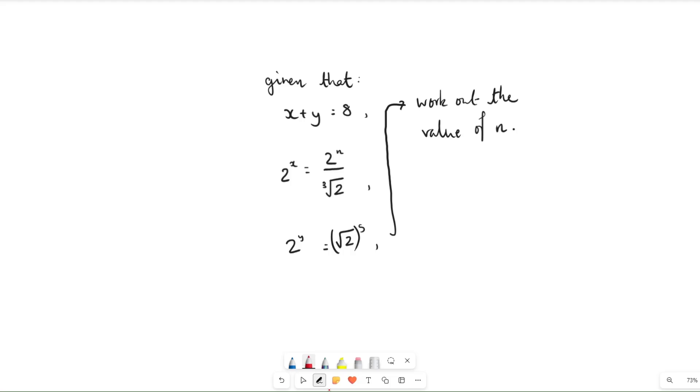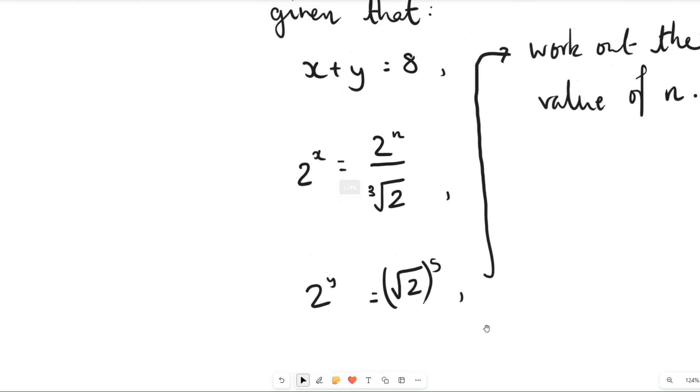Given that, and we've got three different equations here. Given that x plus y equals 8, 2 to the power of x equals 2 to the power of n over the cube root of 2, and 2 to the power of y equals the square root of 2 to the power of 5, work out the value of n. So that's what we're trying to do, so let's just look at the equations first.